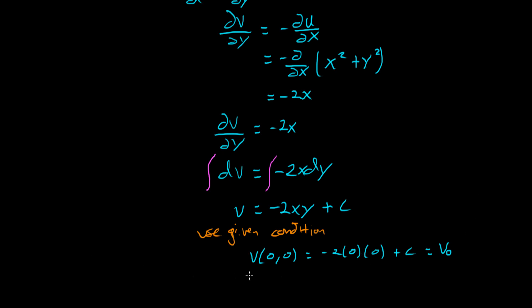And that our final answer, v of x and y, is equal to minus 2xy plus v zero.